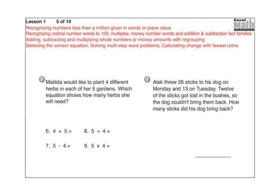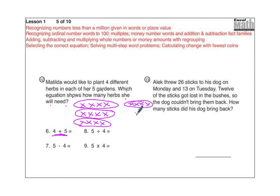Alright, moving on. Now we're going to take a look at some word problems. Matilda would like to plant four different herbs in each of her five gardens. Which equation shows how many herbs she will need? If she's going to plant four herbs, there's her four herbs, and this is one garden, and then she's going to do that five different times, kind of a clue there, then obviously we would not be adding four and five. And I can keep going to show you this five different times. There's her five gardens. And what we're doing is we're taking the number four, and we're multiplying it by five.